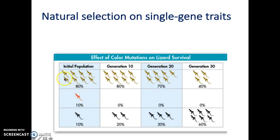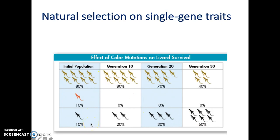As an example in this picture, the initial population can have three different types of phenotypes, and you have a percentage or number of each phenotype — 80%, 10%, and 10%. As time goes on, this percentage changes, which leads to evolution. So we went from 80%, 10%, and 10% to generation 30 having 40% and 60% due to natural selection. This is the result of evolution — how natural selection acts on single gene traits.